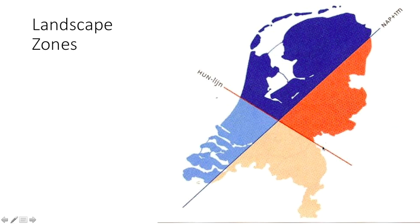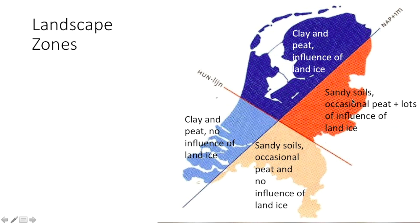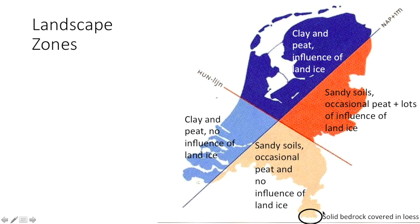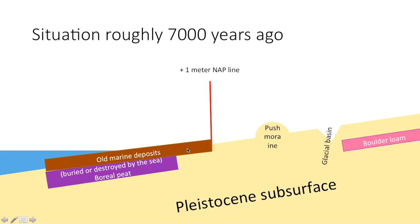We've discussed the NAP+1 line and the Haarlem-Utrecht-Nijmegen line, and we've discussed that there are four distinct landscape zones in the Netherlands: the clays and peats with land ice influence in the northwest; sandy soils with occasional peats and land ice influence in the northeast; sandy soils with occasional peat and no land ice in the southeast; and clays and peats with no land ice in the west. Also mentioned is the solid bedrock covered in loess in the south — Southern Limburg — which will get its own video later in the course.